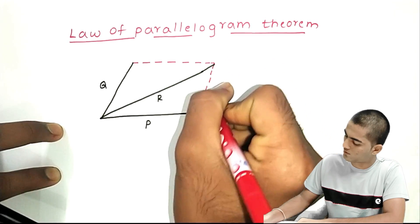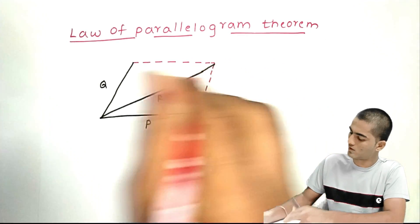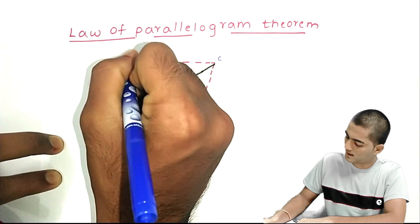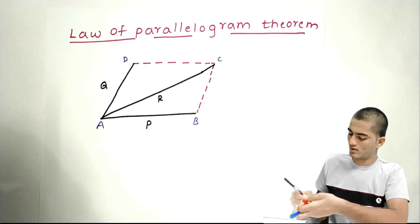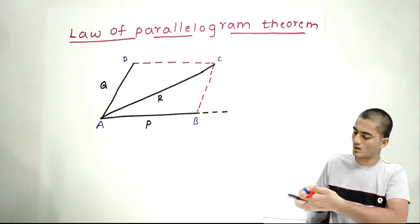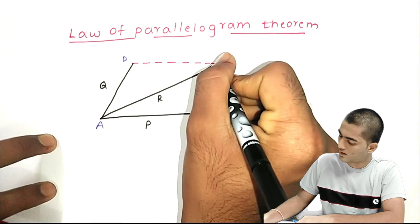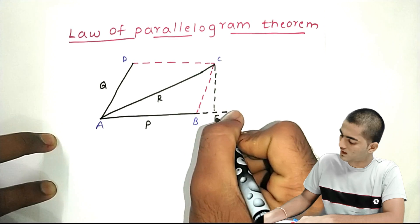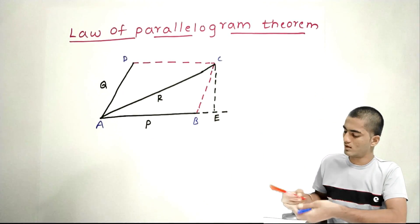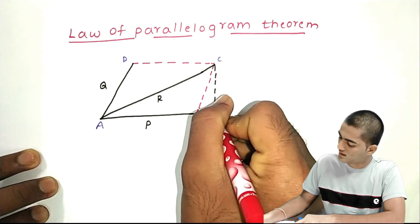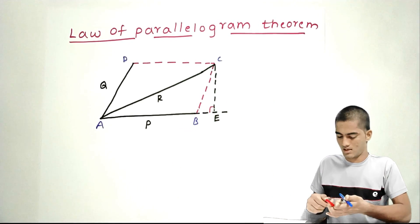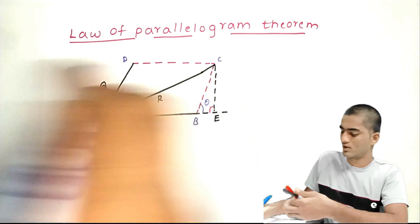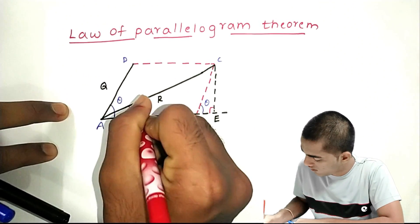This is a Parallelogram. Mark the points: A, B, C, D. Extend A. Draw a line from C to B. The intersection point is E. In triangle CBE, this angle is theta, this is also theta, and this angle is alpha.